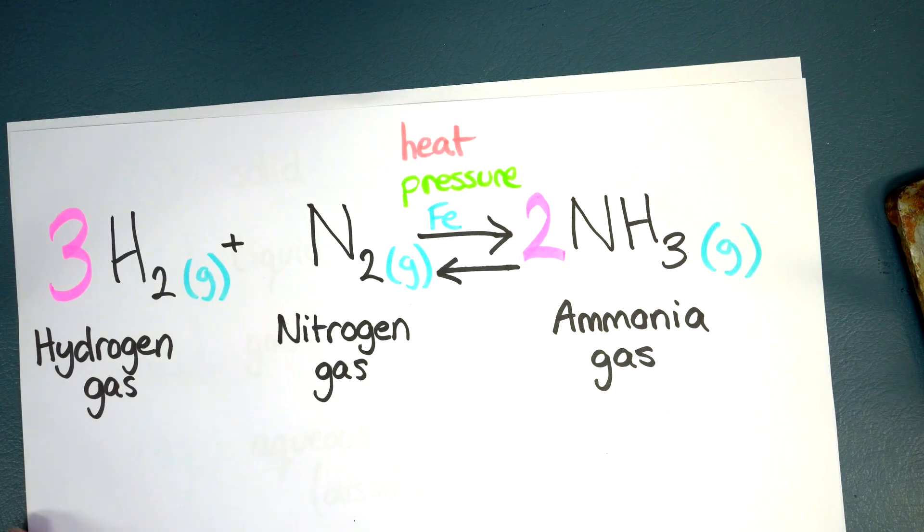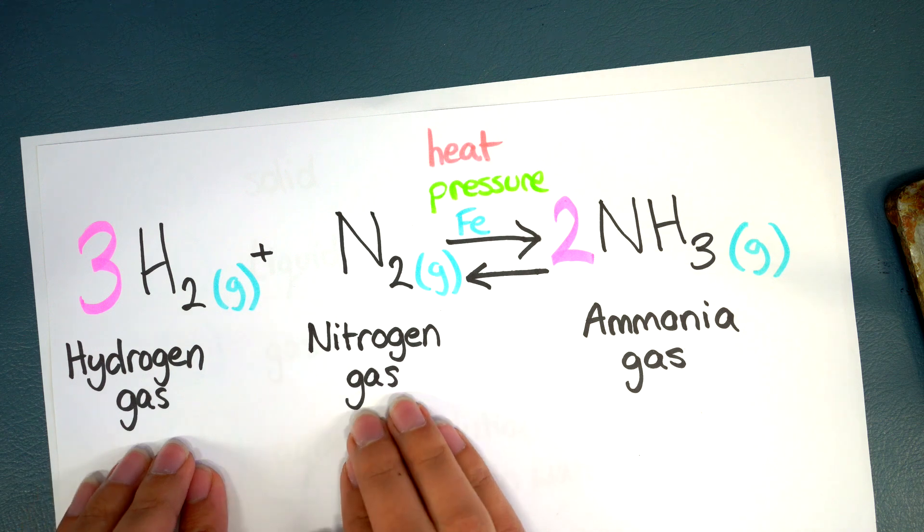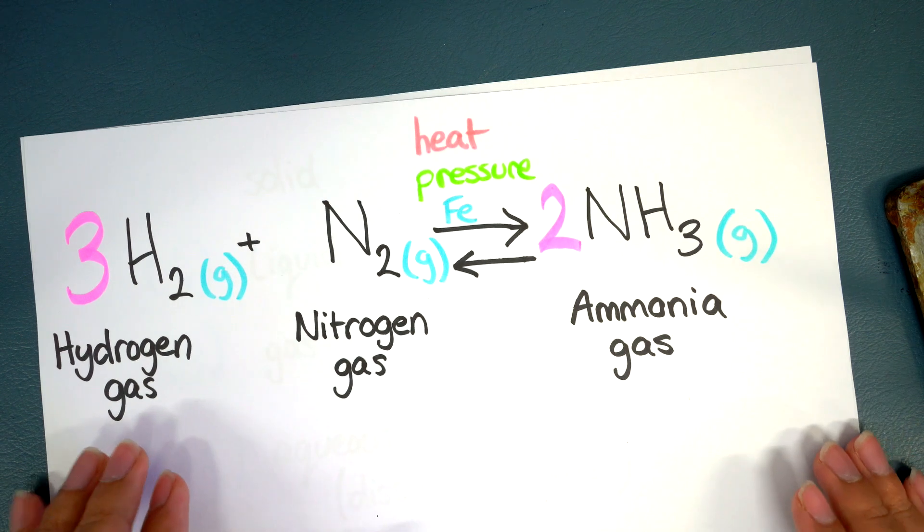Another example here is that we've got the combination of hydrogen gas and nitrogen gas to make ammonia. It's one of the precursors to making fertilizer.